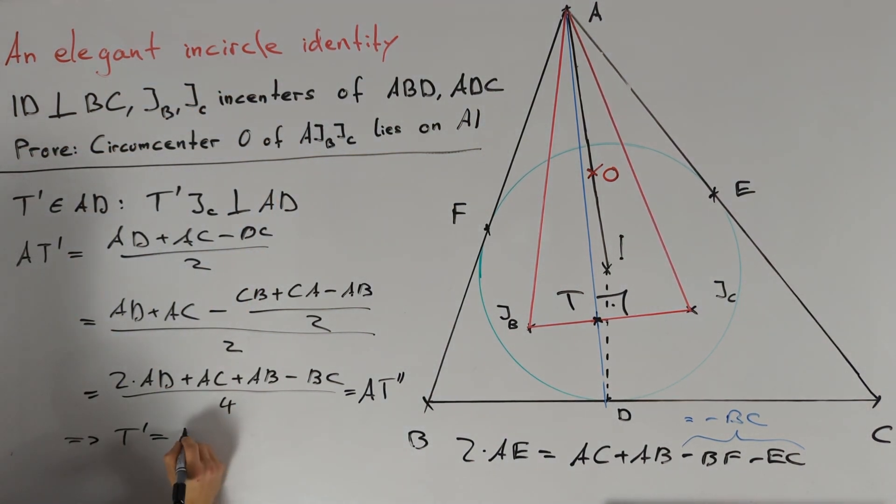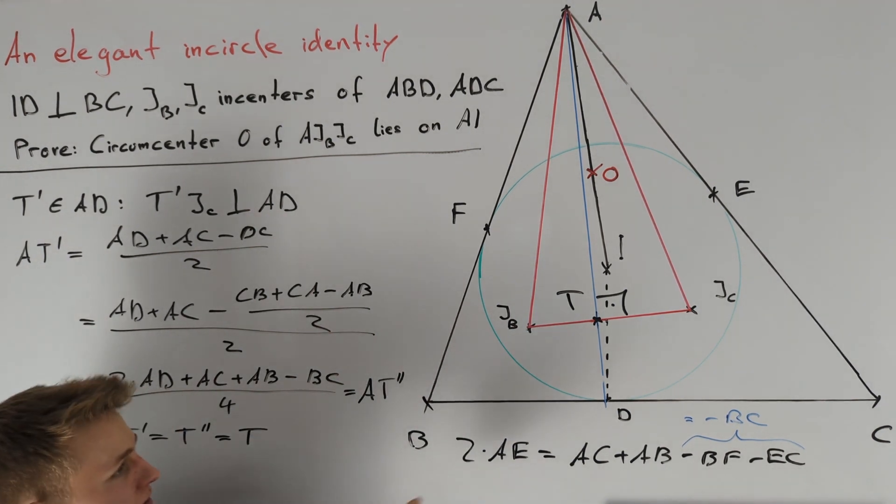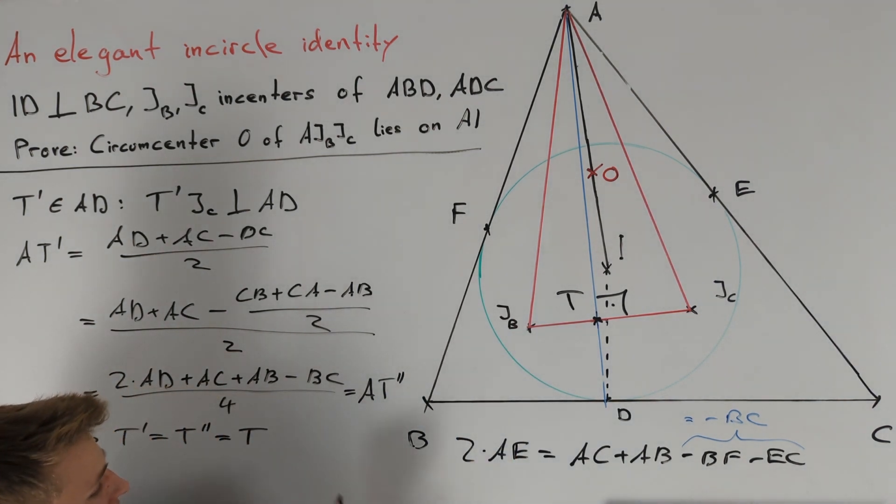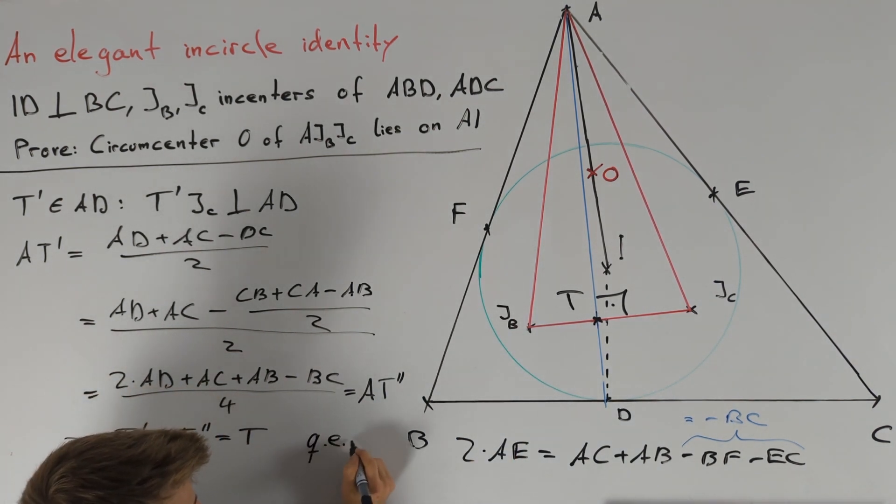So T' equals T'', and we conclude these points equal point T. Therefore, angle JCTA equals 90 degrees, and we're done.